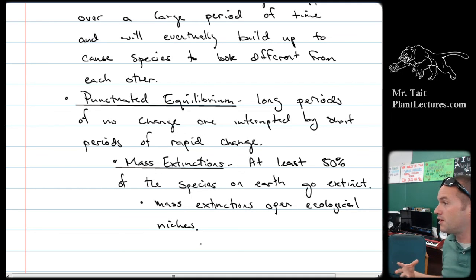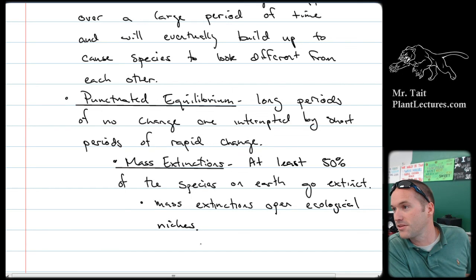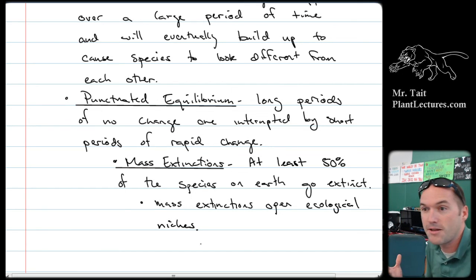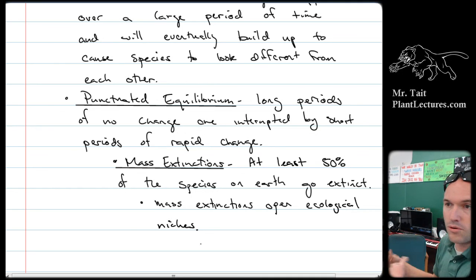So that first generation of rats, all it has to do is catch enough minnows to not die. And there's going to be a lot of minnows because there's nothing eating them because all of the things that ate the minnows, all of the dinosaurs that used to eat the minnows are dead, right? So then the next generation, right, there might be more of the rats.